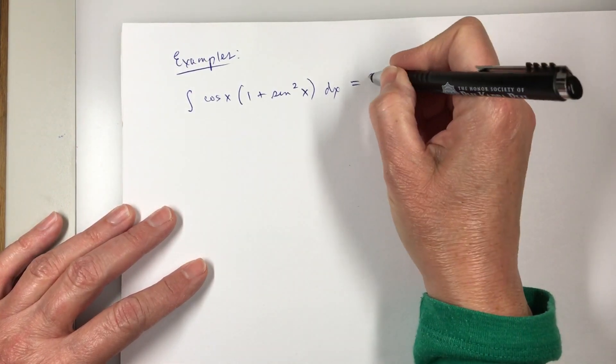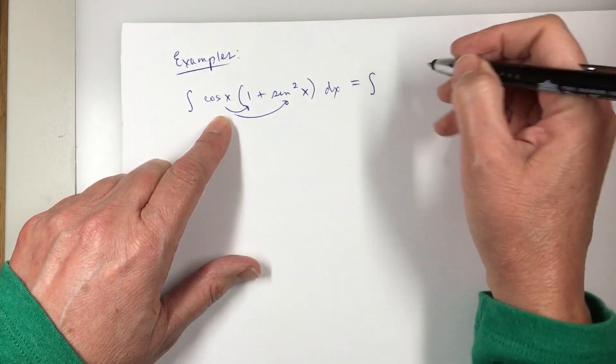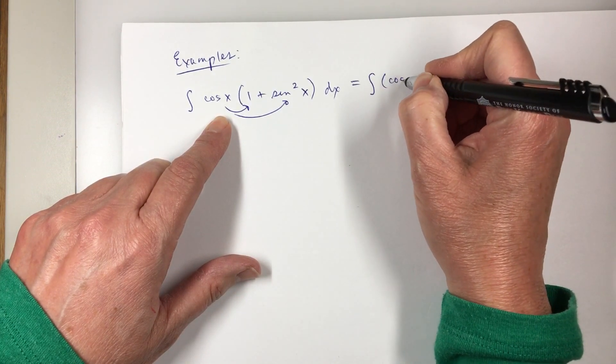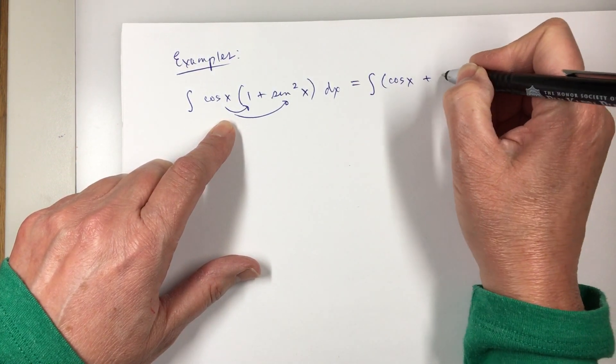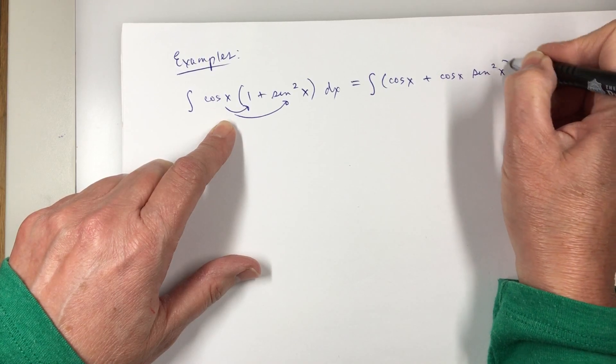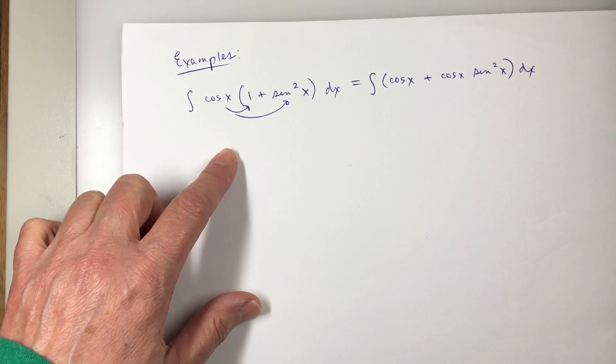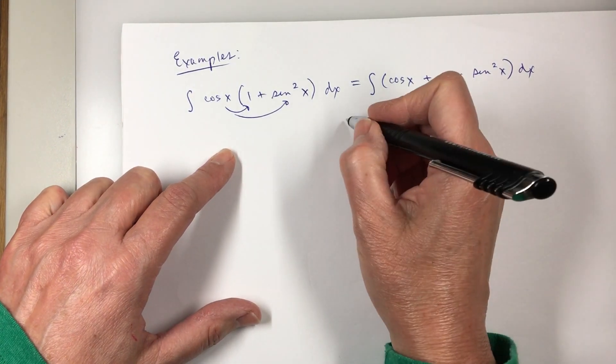So I could do that. The integral, cosine x distributes, of cosine x plus cosine x sine squared x dx, and then I can write it as two separate integrals.